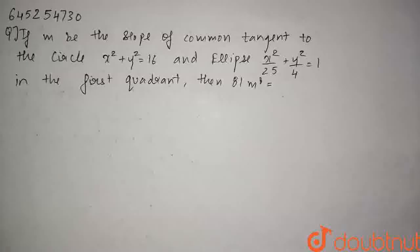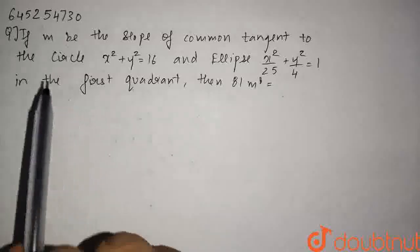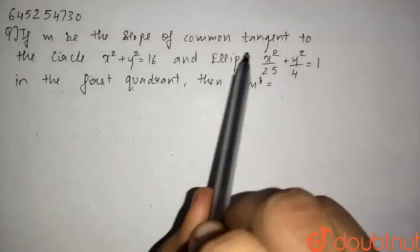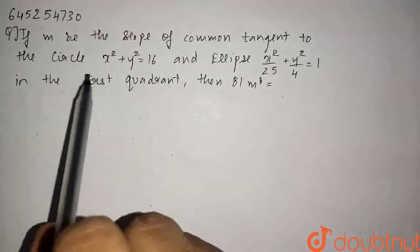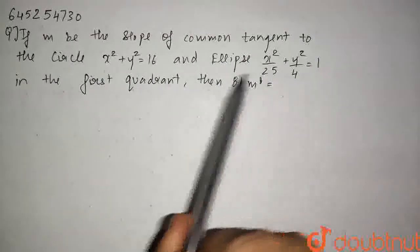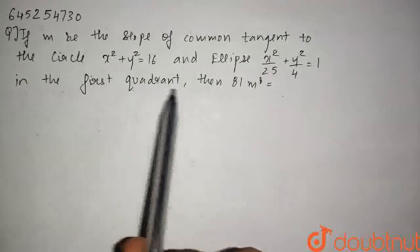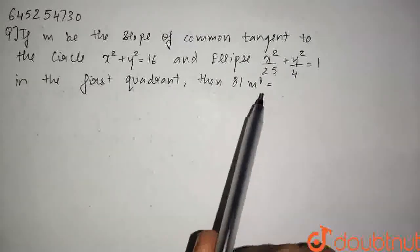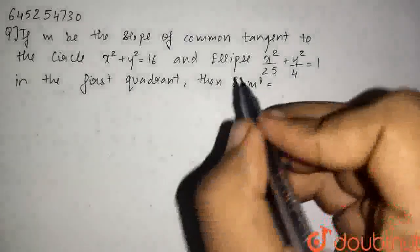Hello students, the question for today is: if m is the slope of the common tangent to the circle as well as the ellipse given in the question in the first quadrant, then we have to find the value of 81 into m to the power 8.